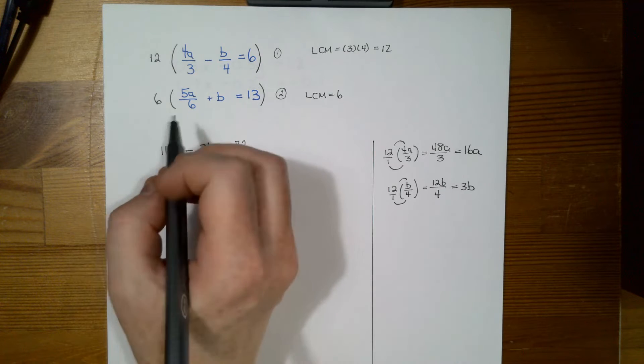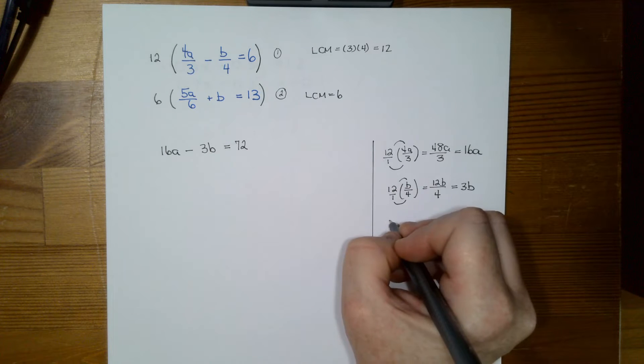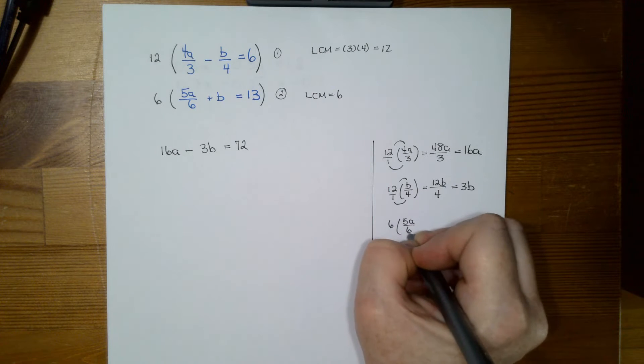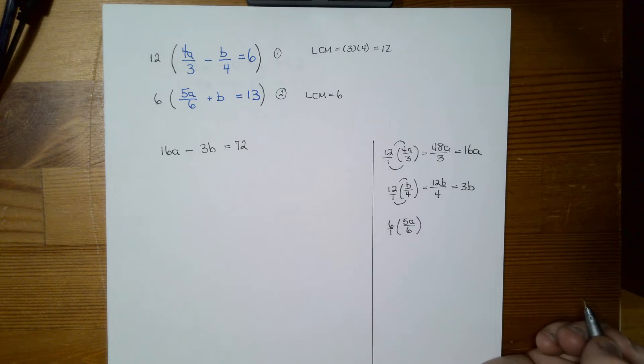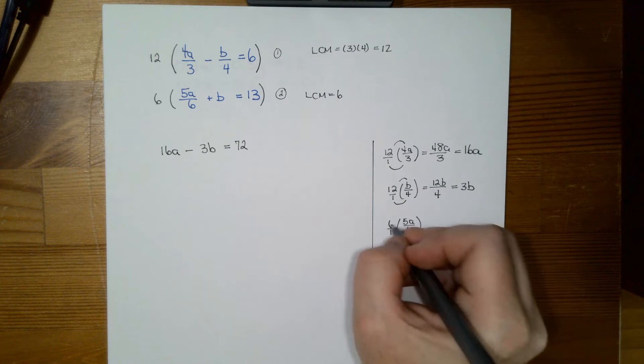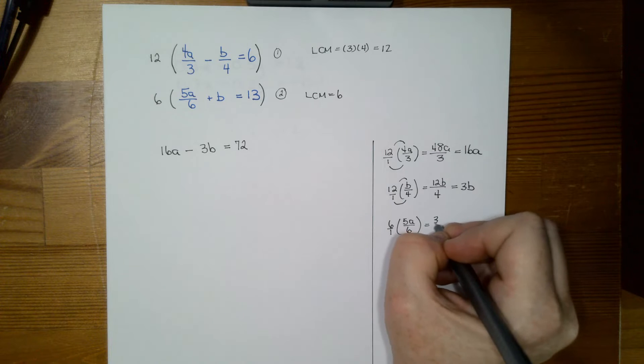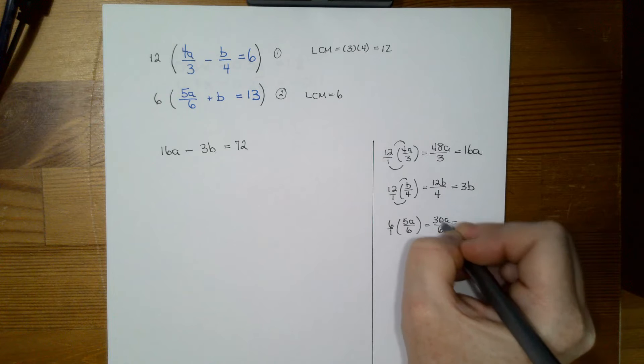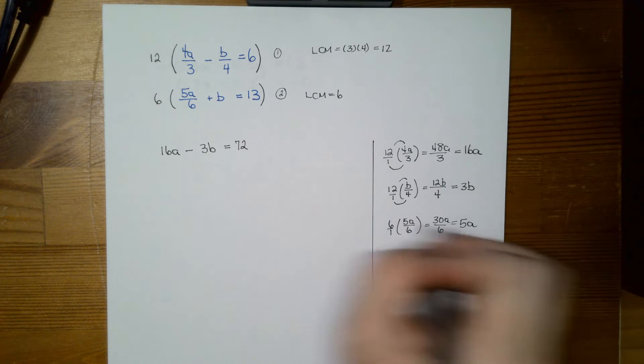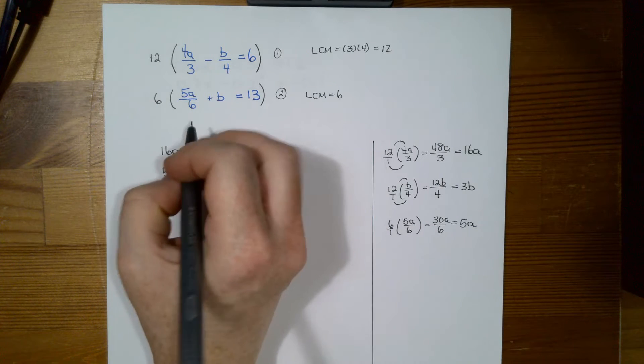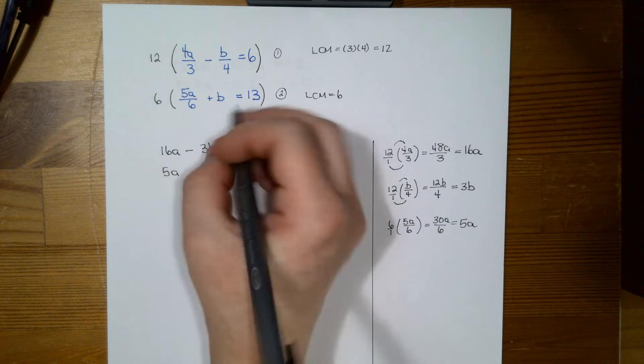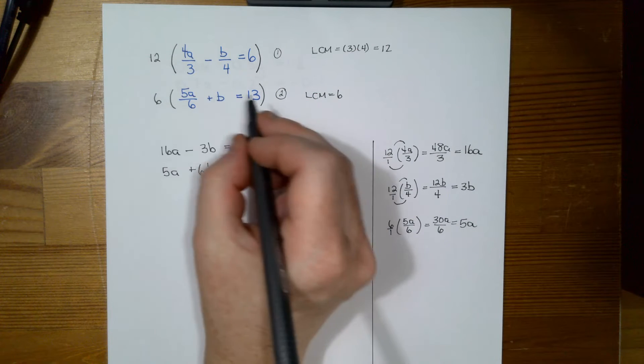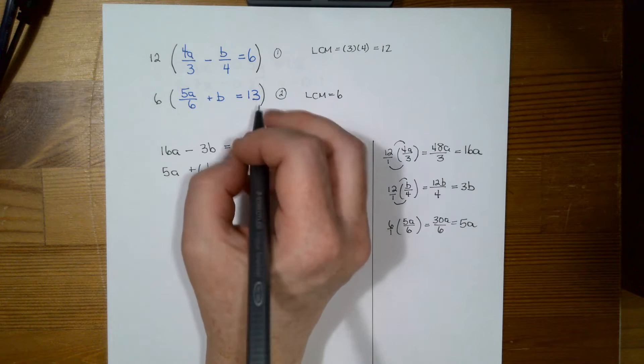So now I have 6 times 5a minus 6. So I'm going to do 6 times 5a, sorry, divided by 6, which is just 6 times 1. So 6 times 5 is 30. And 6 times 1 is 6. And 30 divided by 6 is just 5. So now I have 5a, and then 6 times b is 6b. And 6 times 13 is 78.